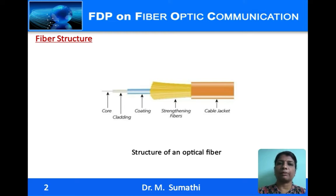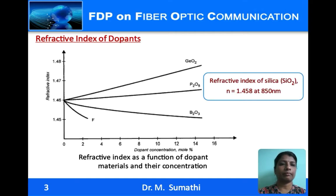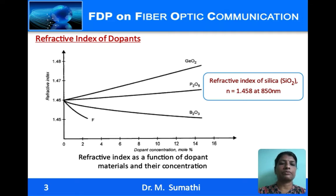The color code of the cable jacket determines the type of fiber: yellow for single-mode fiber, orange for multimode fibers, and blue for polarization-maintaining fibers. Silica or glass (SiO₂) is used for manufacturing of glass fibers.